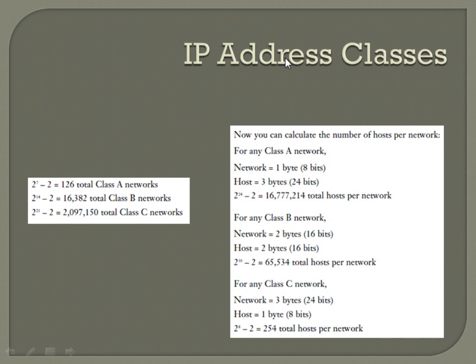We can bring it down even further. Instead of a 128 mask, we've got a 192, which is a combination of 2 to the power of 7 plus 2 to the power of 6 — 64 plus 128. The number of hosts is going to be 2 to the power of 6: 2, 4, 8, 16, 32.